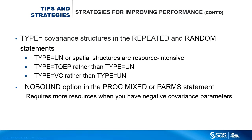Another option that can affect the speed and memory requirements of PROC MIXED is the TYPE= option in the RANDOM and REPEATED statements. When different types of covariance structures all make sense to the data, TYPE=UN and the spatial covariance structures are resource intensive. TYPE=TOEP offers some flexibility in the covariance structure but is much less resource intensive. Also, when you have negative covariance parameter estimates, using the NOBOUND option can remove the boundary constraints, but it can require more resources.